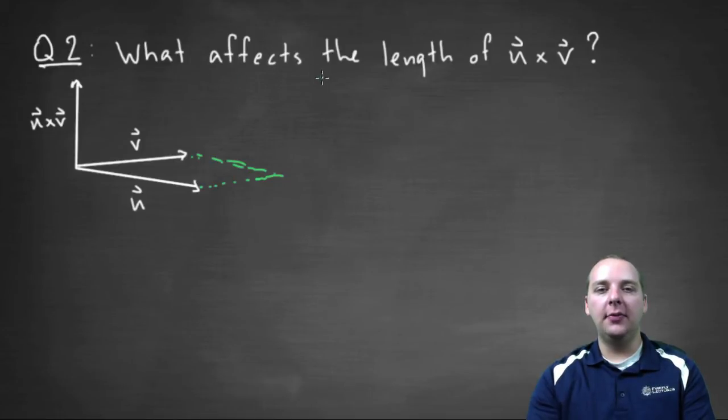And it turns out there's two things that affect the magnitude of the cross product, the length of the cross product. It matters how long u and v are, and it matters what angle is made right here. We'll call that theta.